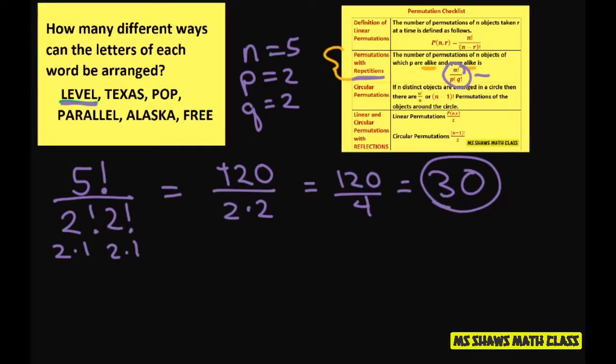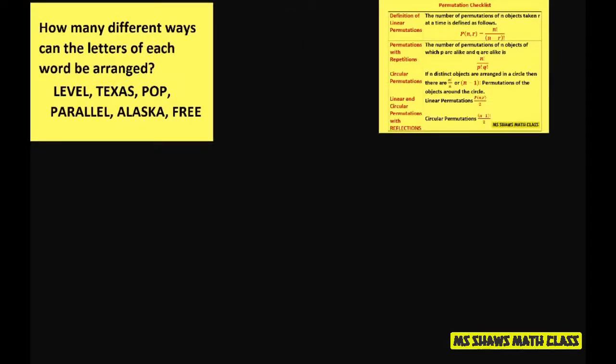Now let's look at Texas. For Texas, we have a total of 5 letters. 1, 2, 3, 4, 5. Alright. None of the letters repeat. So in this case, all we do is have 5 factorial, which is 120 ways in which the letters can be arranged.